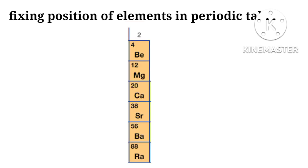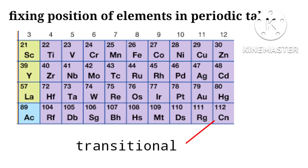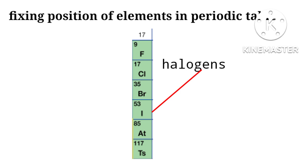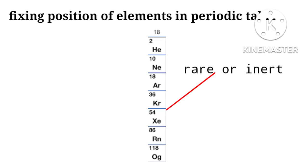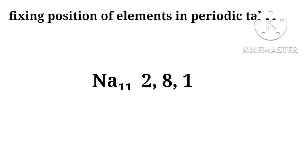First group elements are called alkali, second group as alkalines, third to twelfth group are called transitional elements, seventeenth group elements are called halogens, and 18th group as called rare or inert gases. We can fix position of elements in the periodic table.